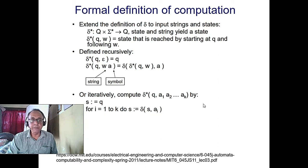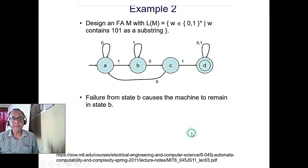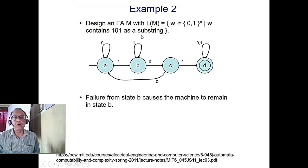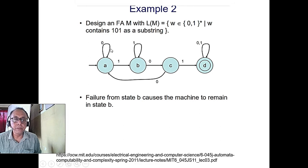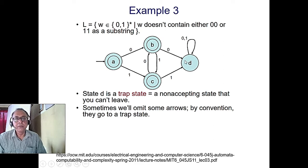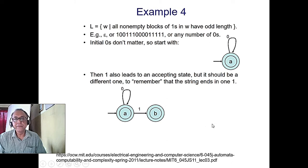This is called delta-hat or delta-star, which involves serial conversion — already covered in a previous class. Here is another DFA example: it accepts any string where '101' appears as a substring. With only one path for each symbol, this is a DFA. If the same symbol could lead to multiple states, it would be an NDFA, which is more difficult to design.